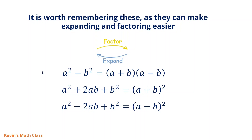The first one is called difference of squares: a squared minus b squared equals a plus b times a minus b. Going this way is factoring, and going back is expanding.